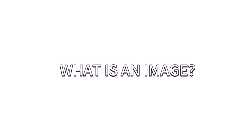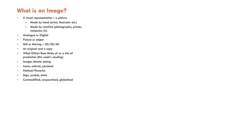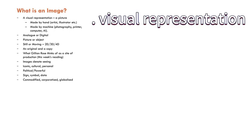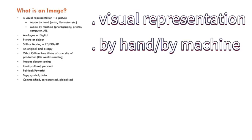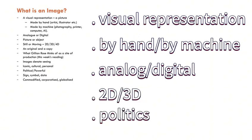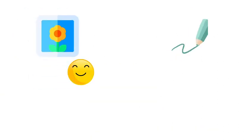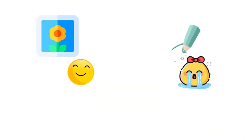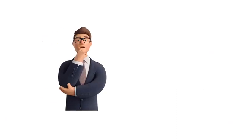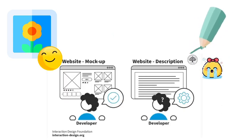So firstly, what is an image? According to lecture, an image is a visual representation, either by hand or by machine, analog or digital, 2D or 3D. Visual representations are more effective than words. And with visual ads, some designers show that visual representation can communicate their ideas more easily.